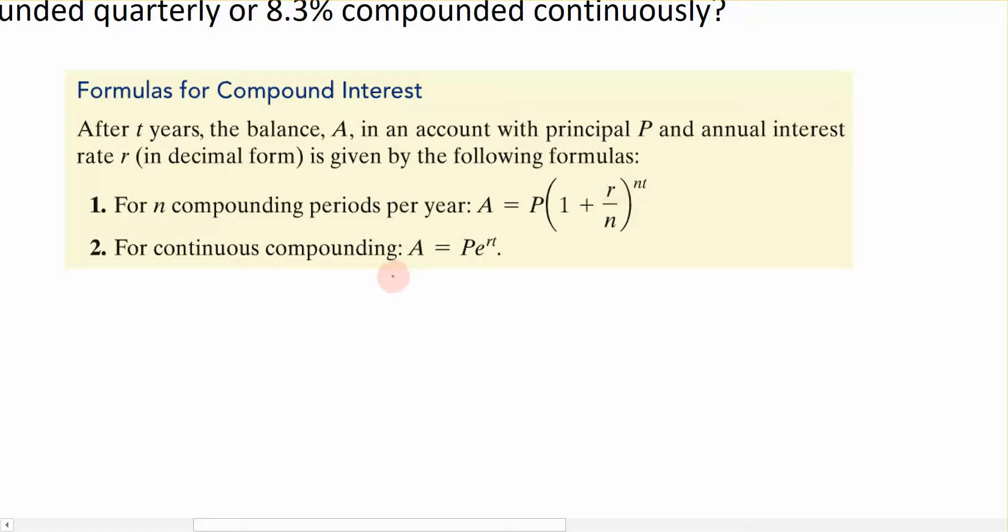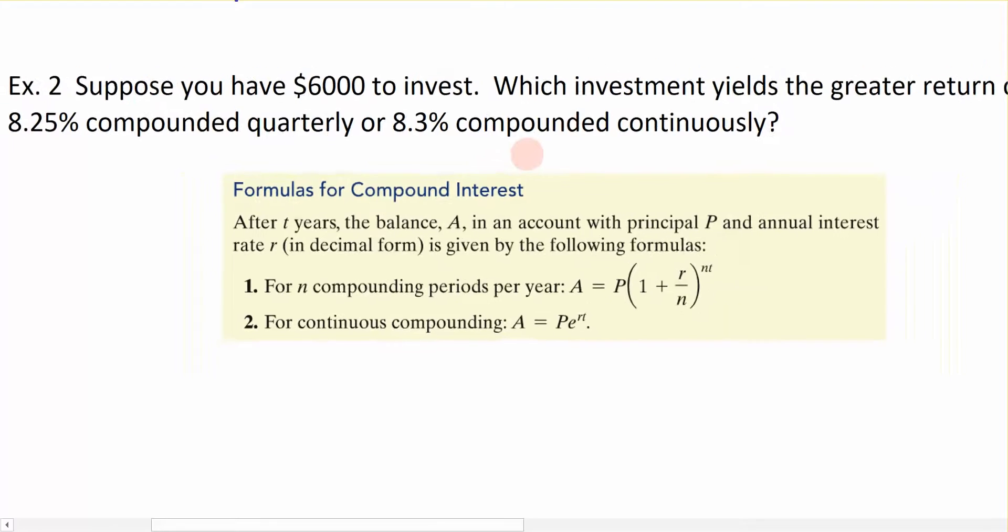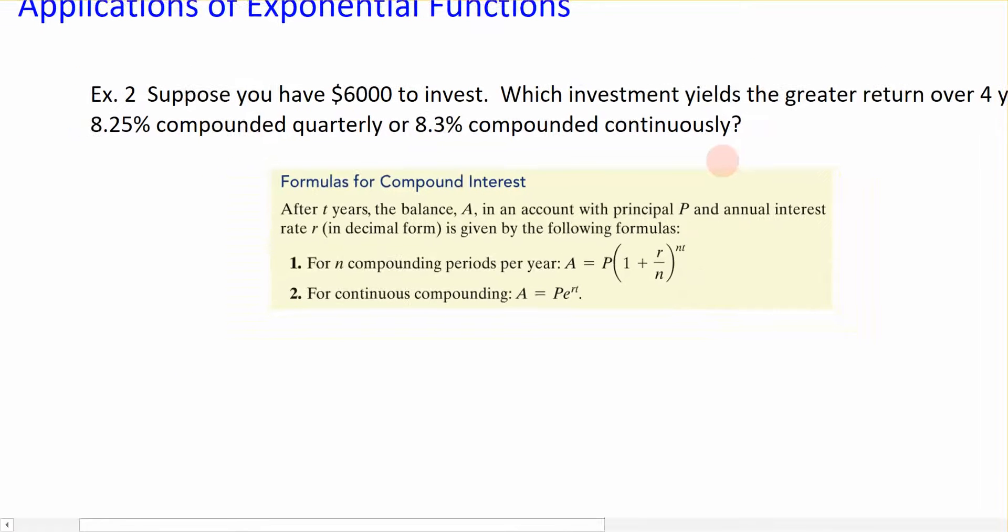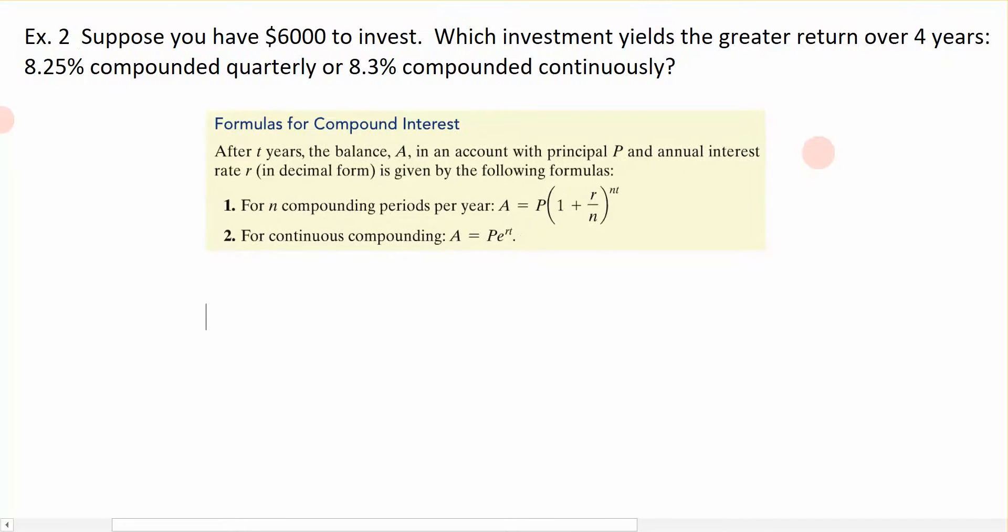Another way to talk about compounding interest has to do with this formula that I kind of call PERT because it looks like that's what it's spelled like, and it's if I compound continuously. These are the two formulas that we're going to use in this example, and I'm going to go through what each of these variables represent as we identify them in the problem.